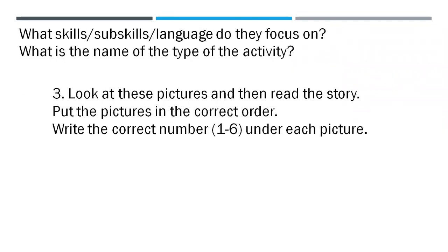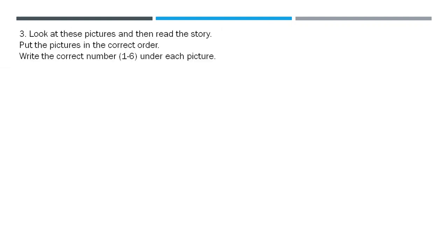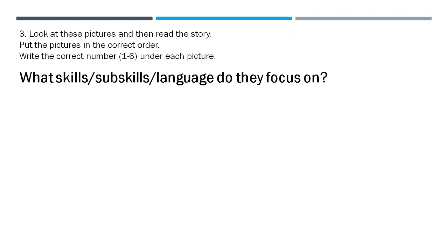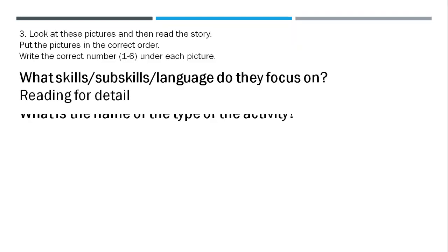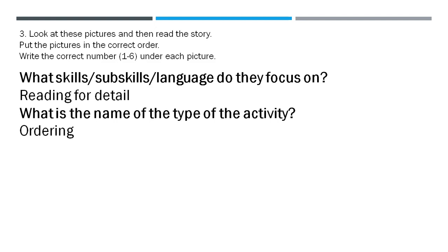Number three: look at these pictures and then read the story, put the pictures in the correct order — write the correct number one to six under each picture. That is reading for detail, and let's call it ordering.